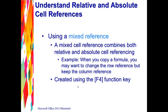Like an absolute reference, a mixed reference can be created by hitting the F4 key or typing the dollar sign. The F4 key cycles through the options: the first press makes it an absolute cell reference (dollar sign before both column and row); the second press puts the dollar sign in front of the row number only; the third press puts it in front of the column only. You may want to play around with that to experience the cycling.